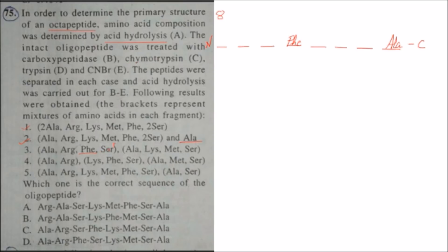Chymotrypsin will cut at the C-terminal of phenylalanine. So we get 4 amino acids in the first fragment and 4 amino acids in the second fragment — 4 peptides by the hydrolysis of chymotrypsin. Counting again: 1, 2, 3, 4 amino acids in each fragment.